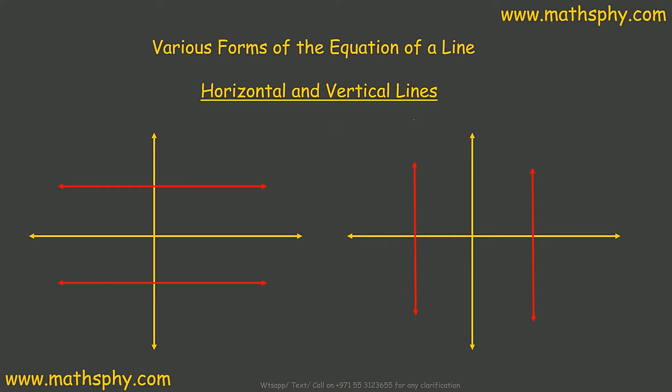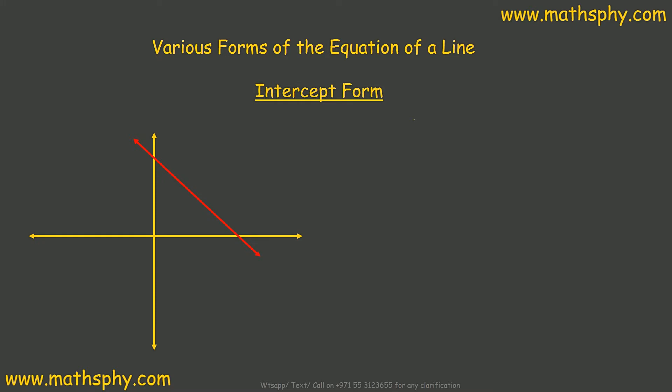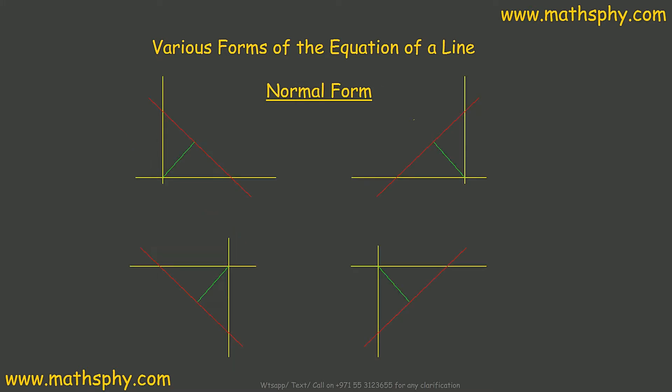Here we will study about various forms of equation of a line: the equation of a horizontal or vertical line, point-slope form, two-point form, slope-intercept form, intercept form, and at the end, the normal form of a line.